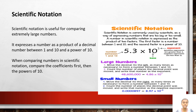Scientific notation is useful for comparing extremely large numbers. It expresses a number as a product of a decimal number between 1 and 10 and a power of 10. When comparing numbers in scientific notation, compare the coefficients first, then the power of 10.